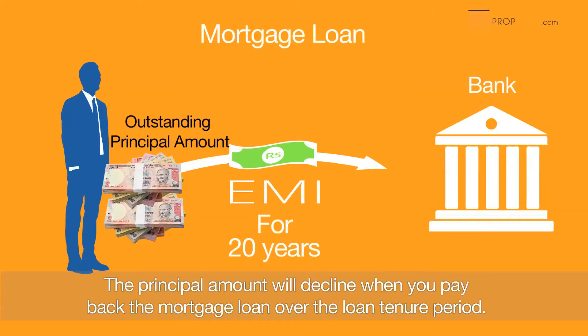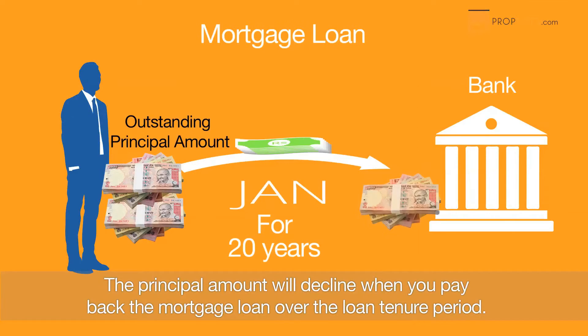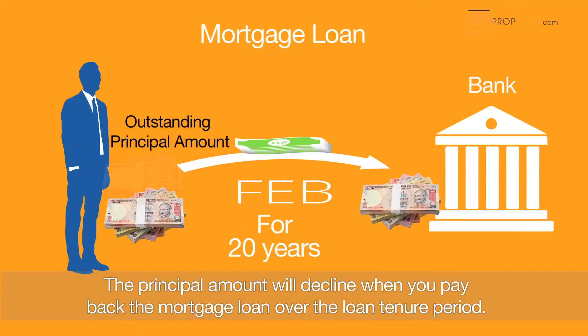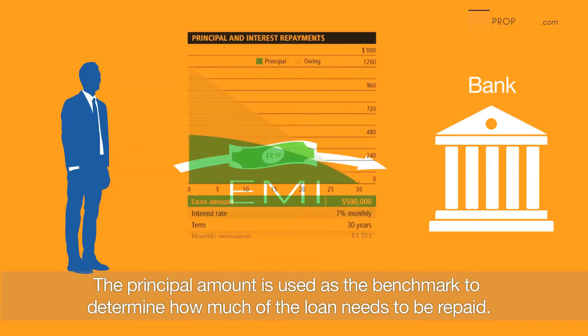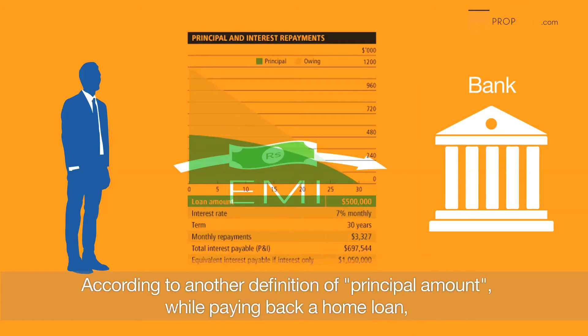The principal amount will decline when you pay back the mortgage loan over the loan tenure period. The principal amount is used as the benchmark to determine how much of the loan needs to be repaid.